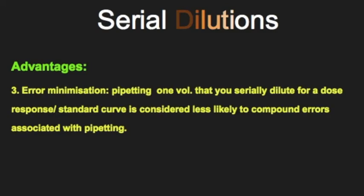Thirdly, error minimization. Preparing five different volumes for a standard curve or a dose response is considered to have potentially compound errors from each pipetting. So it's considered that if you just take the one volume and then serially dilute it, you minimize the errors that are associated with you pipetting multiple times.